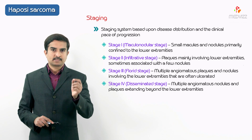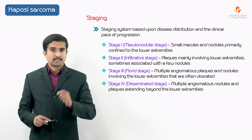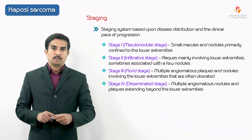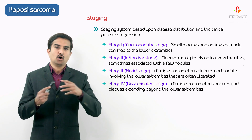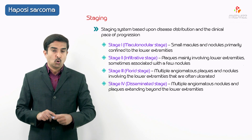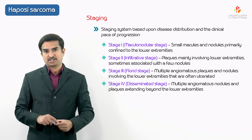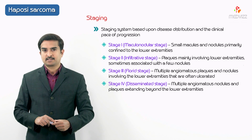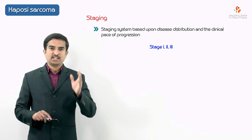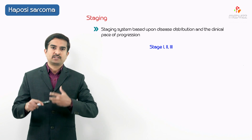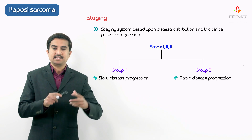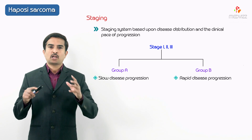Stage 4 is called the disseminated stage. In this stage, one can find multiple angiomatous nodules and plaques, but these lesions extend beyond the lower extremities — they are not confined to the lower extremities only, but cross beyond that border. Stages 1 through 3 were further subdivided into slow (group A) or rapidly progressive disease (group B).